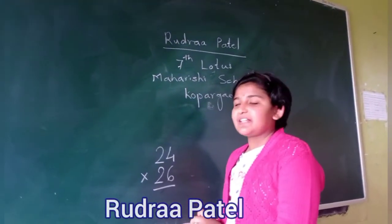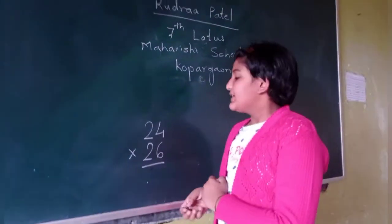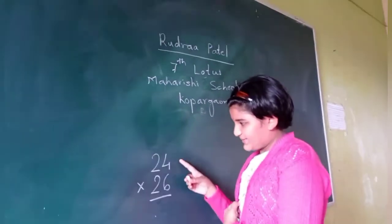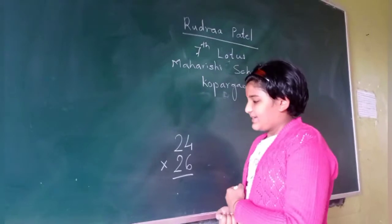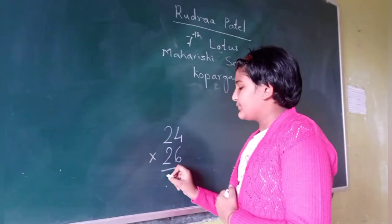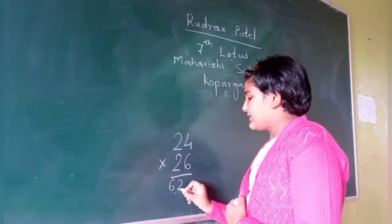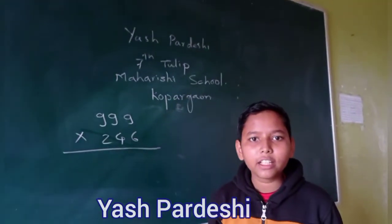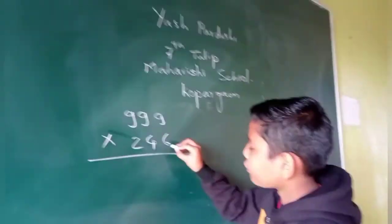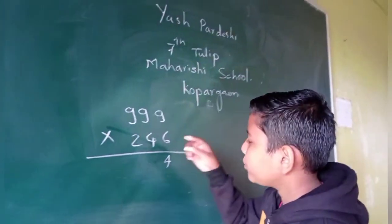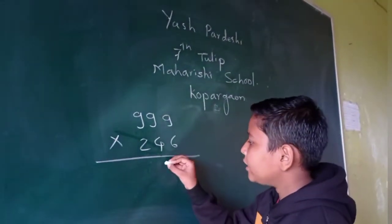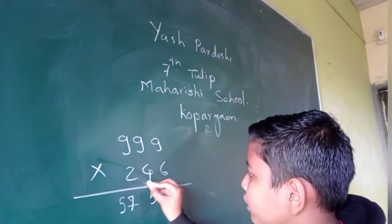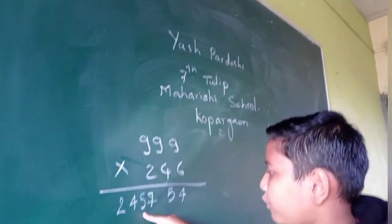Hi, my name is Rudra Patel. I am studying in class 7. I will show today multiplication trick. So, for that, I have taken 2 numbers 24 and 26. Please note that sum of this 10 units place numbers is 10 and 10's place numbers are same. So, multiply this number with the next number. 2 into 3, it becomes 6. And 4 into 6, it becomes 24. Our answer is ready. This trick, the name of this trick is last from 10 and rest from 9. As I said, last from 10. So, we have to subtract 6 from 10. It will come 4. We have to subtract rest numbers from 9. 4 minus 9 is 5. And 2 minus 9 is 7. We have to subtract 1 from 6. It will come 5. And we have to take 24 as it is. So, it will come 2,45,754.